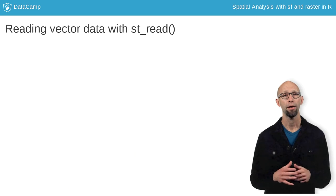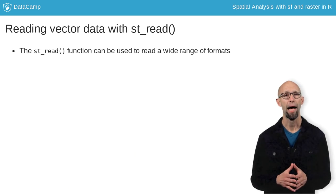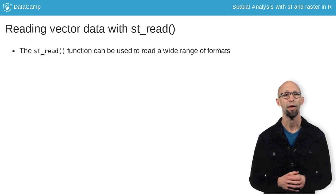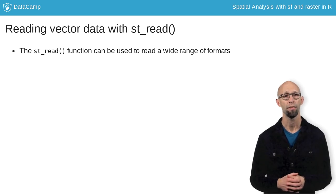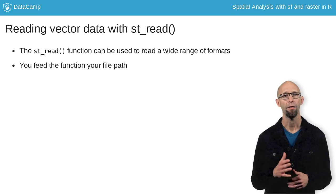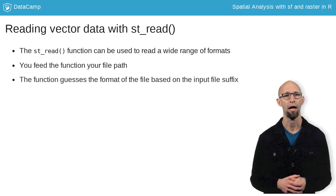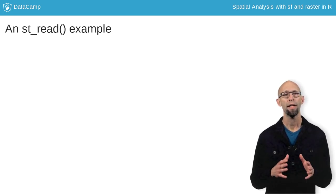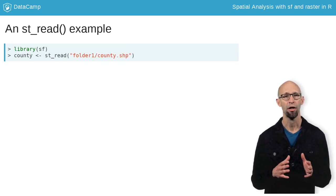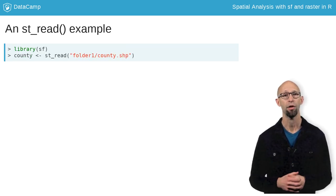For vectors, the st_read function from the SF package has dramatically simplified reading vector data into R compared with previous approaches. With st_read, you simply feed a path and the function guesses the type based on the suffix. With this example, you can see how simple it can be — in this case, we feed the function the path to a shapefile.